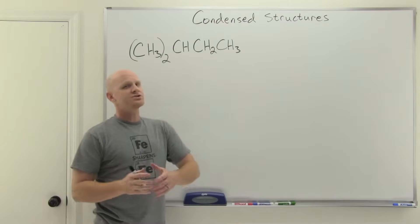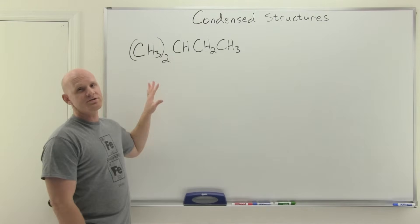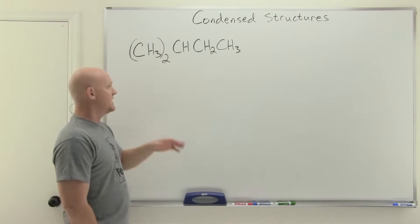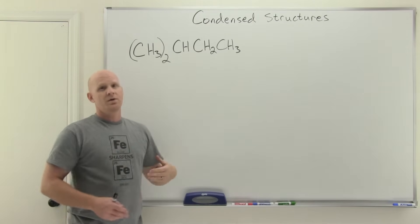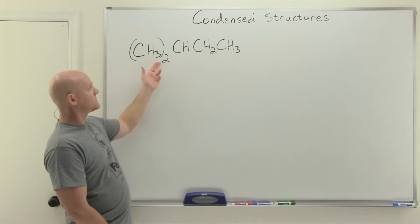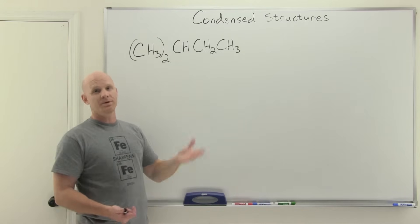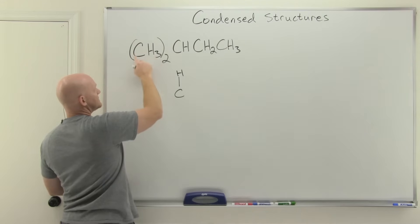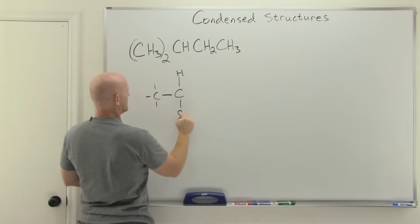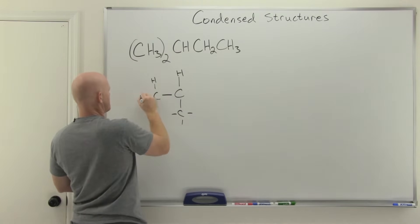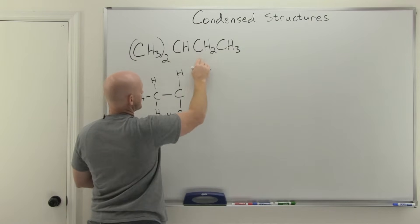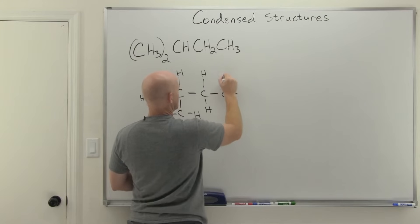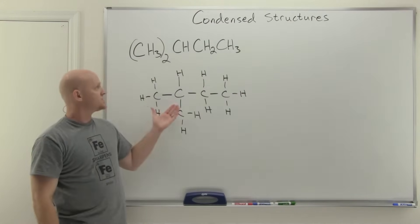The third use of parentheses is really a special case of the second: when a subscript indicates multiple identical branches attached to the same carbon. Again, this only applies to multi-atom branches. For example, a carbon bonded to one hydrogen and two CH3 branches — written as (CH3)2 — shows both identical branches coming off that same carbon. We then continue down the chain to the remaining carbons and hydrogens.